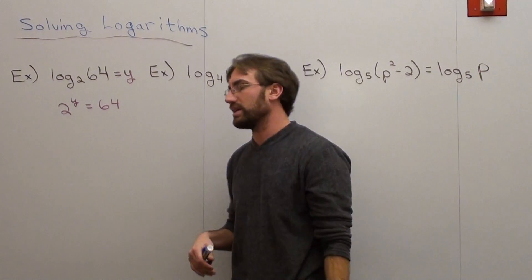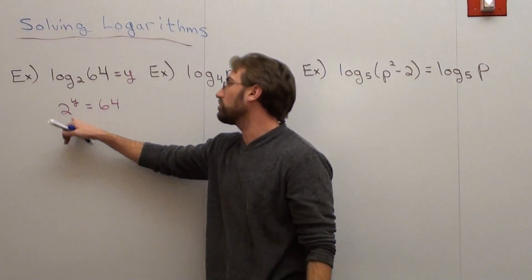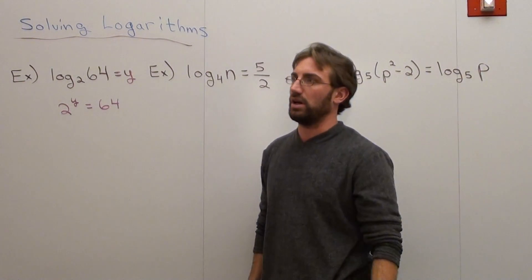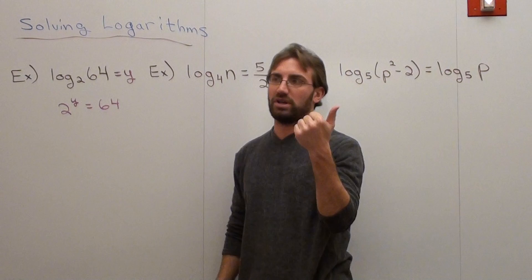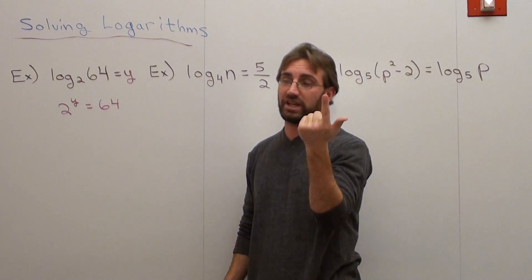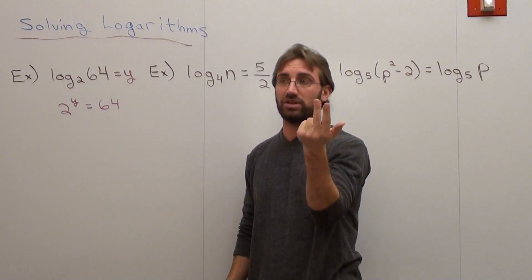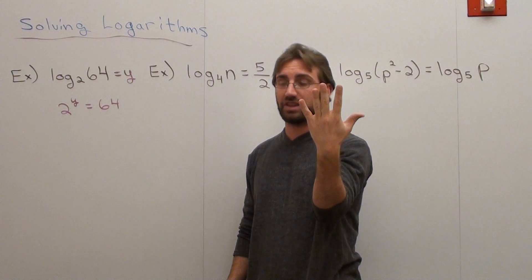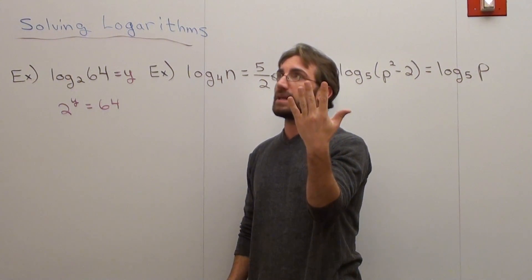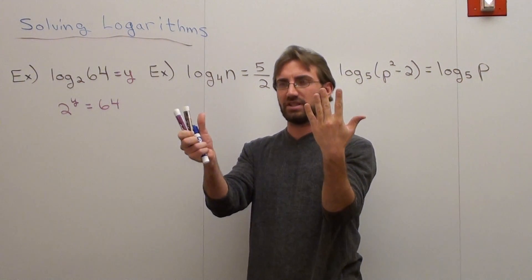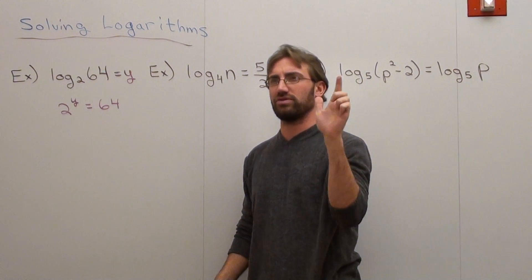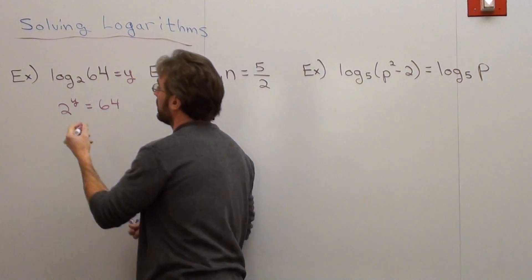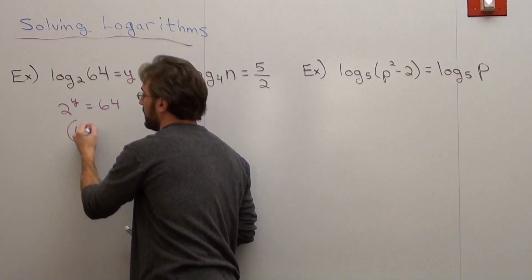Basically, what that means is: 2 to what number equals 64? Let's see — 2 to the 1st is 2, 2 to the 2nd is 4, 2 to the 3rd is 8, 2 to the 4th is 16, 2 to the 5th is 32, 2 to the 6th is 64. Let's just make sure: 4, 8, 16, 32 — yes. So the answer to this one is 6.